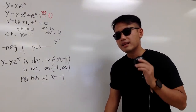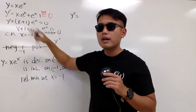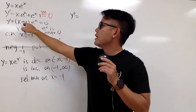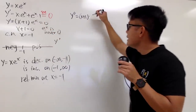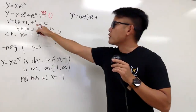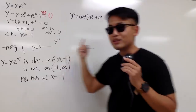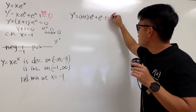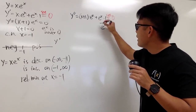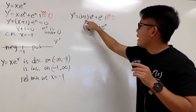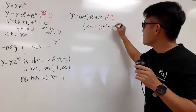Now let's get the second derivative. I'll look at the first derivative and differentiate it using the product rule: keep (x + 1) times the derivative of e to the x, which is still e to the x, then add e to the x times the derivative of (x + 1), which is just 1. Setting this equal to 0 and factoring out e to the x, I get e to the x times (x + 2). So x + 2 is what we're solving.